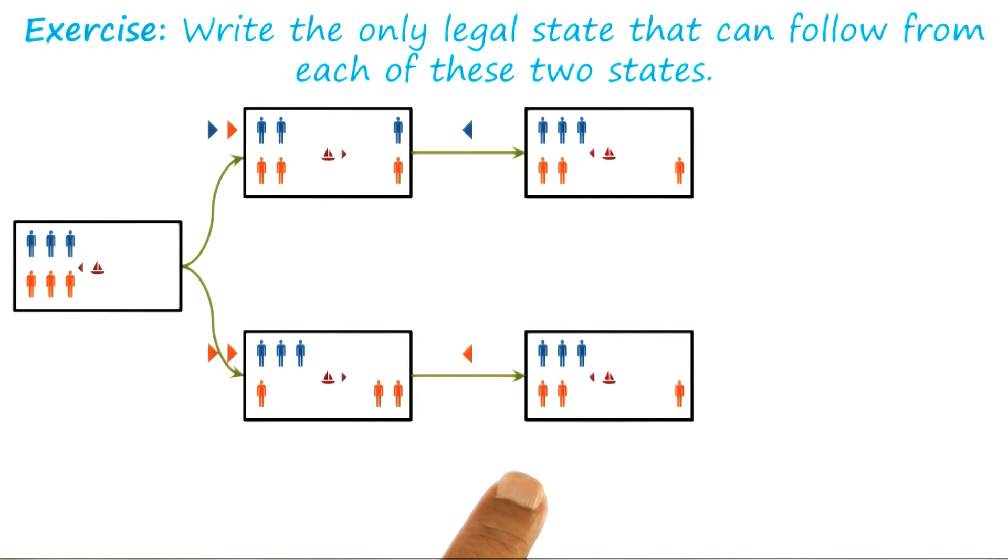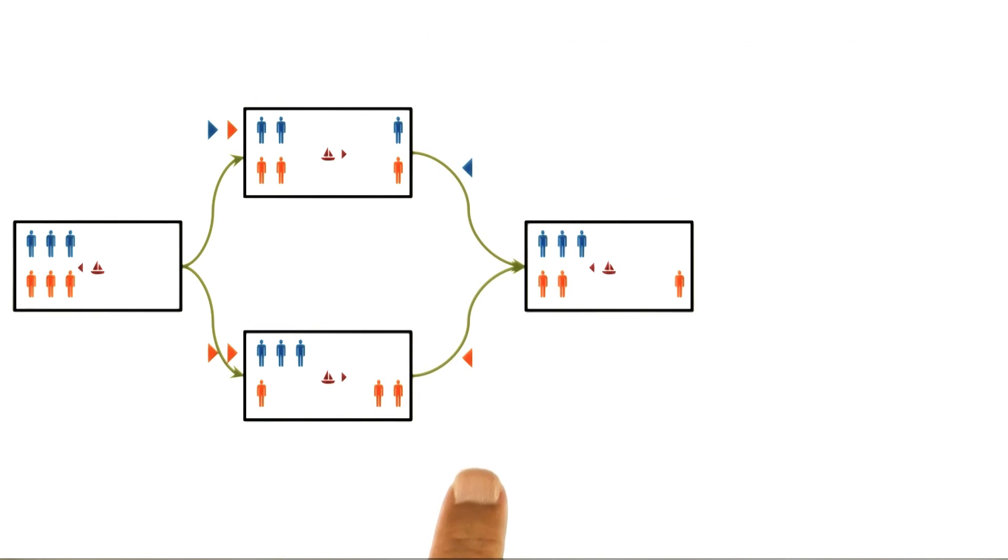And because they're identical, therefore we can collapse them into one state. So now we get the representation shown in this figure. The two states have been collapsed into one.